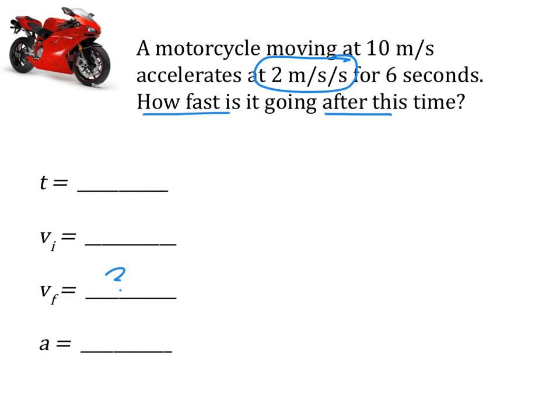Let's go back here and read. A motorcycle is moving at 10 meters per second and then it accelerates at 2 meters per second per second for 6 seconds. So this 10 meters per second is what it was doing at the start of the motion, at the beginning of the story. That's our initial velocity. The time is 6 seconds and our acceleration rate is 2 meters per second per second. Or again, 2 meters per second squared.